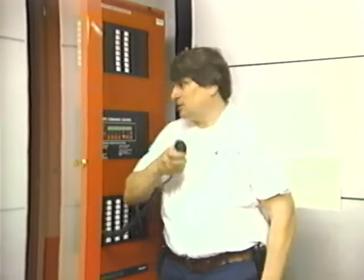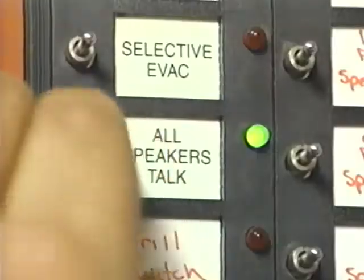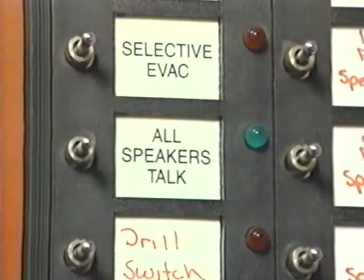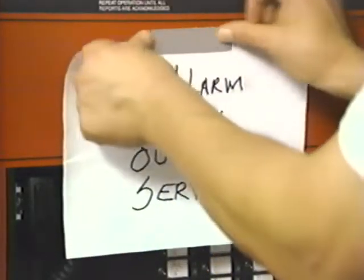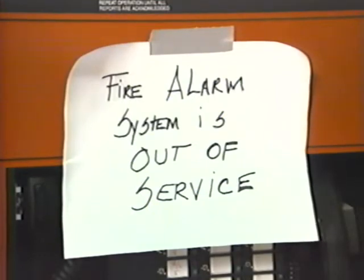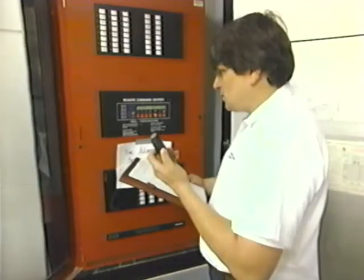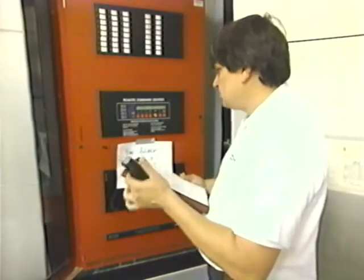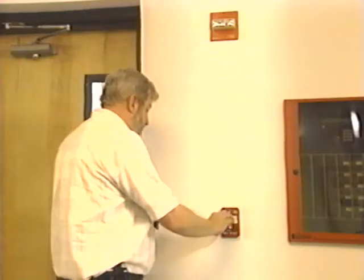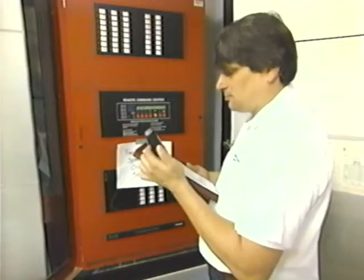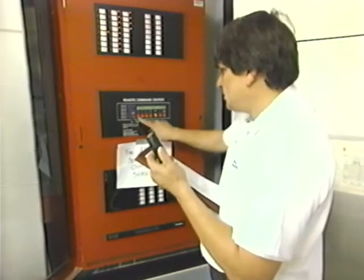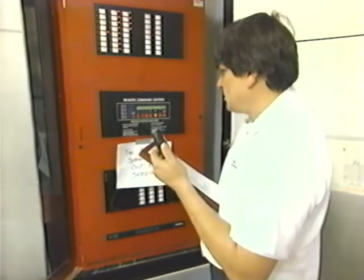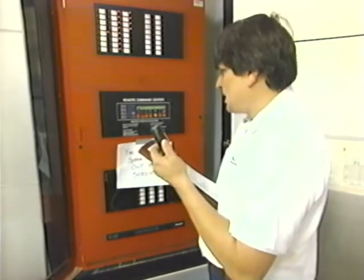Another solution is to disable the system. Make sure that all concerned parties, such as the fire department and security personnel, know that the system is disabled. Maintain a presence at the control unit for the entire time the system is disabled, and maintain constant communication between that person and personnel working in the field.